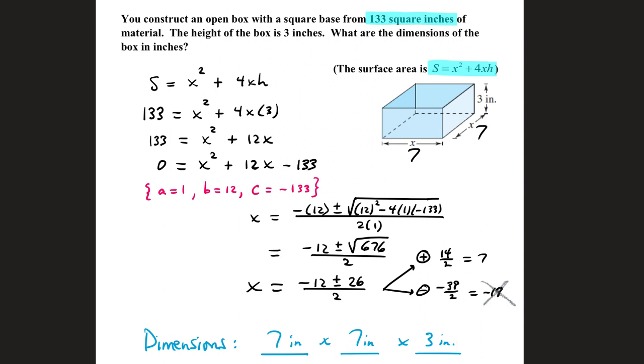Surface area is the amount of material that you use to construct the box. Now we're told it's a square base, so that means we have x by x for the bottom, a height of 3 inches. It's an open box, so we don't have to account for the top of it.